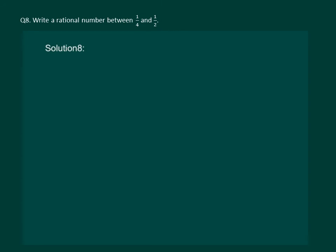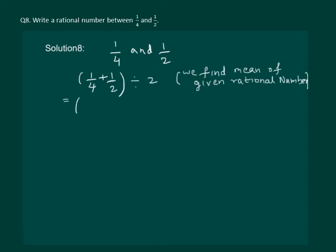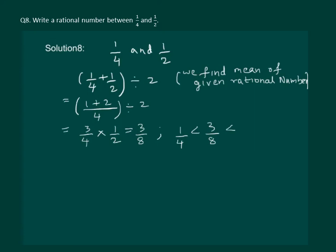Find a rational number between 1 by 4 and 1 by 2. Let us do this question in a different method. We can find the mean of the two given rational numbers — that means we add the two rational numbers and then divide by 2. The rational number so obtained will lie between 1 by 4 and 1 by 2. The LCM is 4, so 1 by 4 plus 1 by 2 equals 3 by 4, multiplied by 1 by 2 gives us 3 by 8. And 3 by 8 is greater than 1 by 4 but less than 1 by 2.